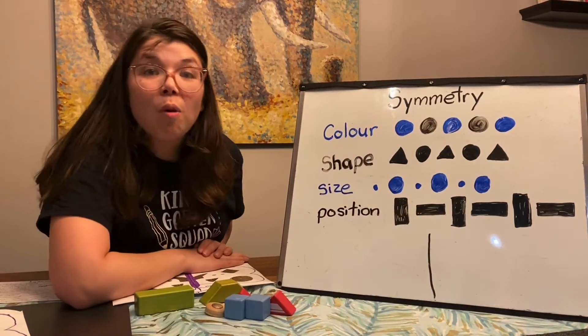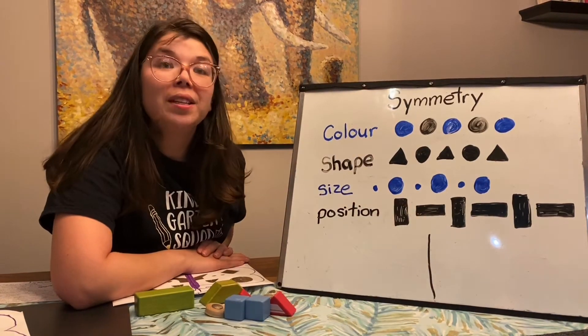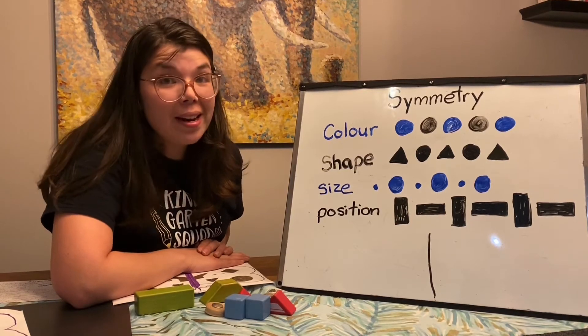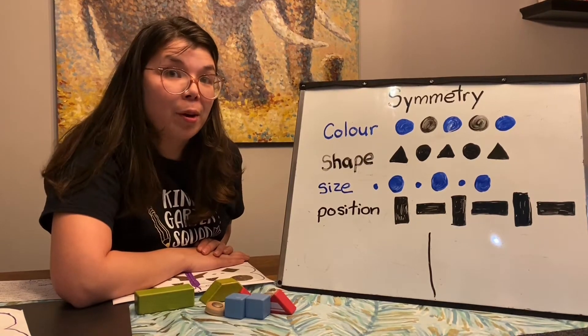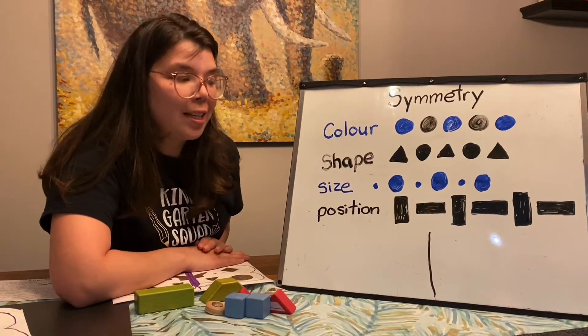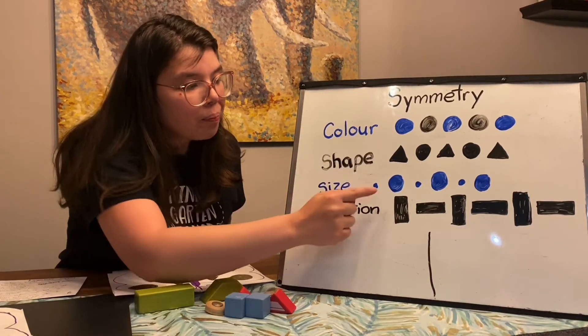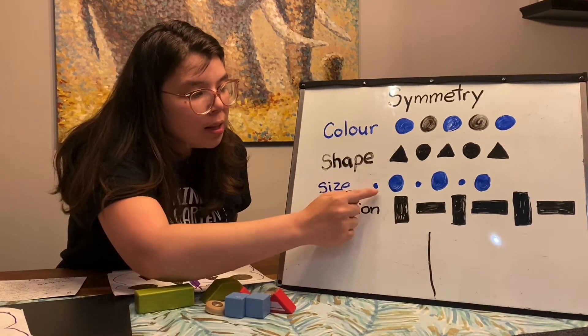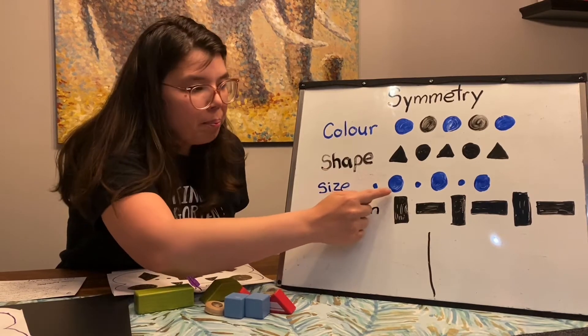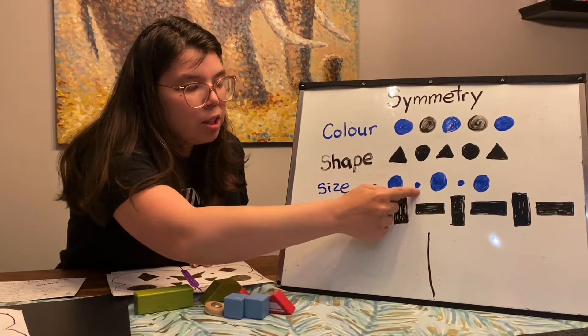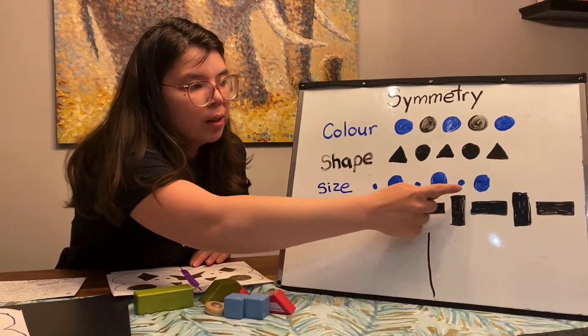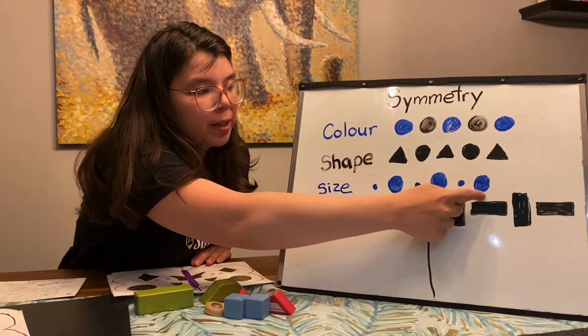You also need to know different sizes. I've made another AB pattern with the size changing: little circle, big circle, little circle, big circle, little circle, big circle. A, B, A, B.